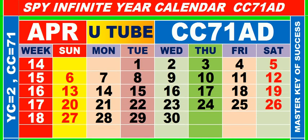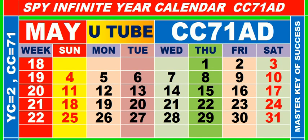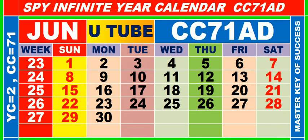Calendar for the month of April, having calendar code equal to 71. Calendar for the month of May, having calendar code equal to 71. Calendar for the month of June, having calendar code equal to 71.